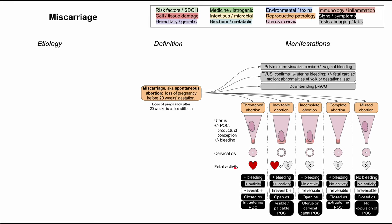You can assess fetal activity and the cervical os with tests and imaging. First, do a pelvic exam to visualize the cervix and check for vaginal bleeding — you need to confirm that bleeding is coming from the uterus and not from the vaginal mucosa. Next, a transvaginal ultrasound will confirm uterine bleeding, assess for fetal cardiac motion, and detect abnormalities of the yolk sac or gestational sac. You'll also check the mother's beta-HCG, which should be increasing in early pregnancy — if it's downtrending, that's a sign of miscarriage or spontaneous abortion.